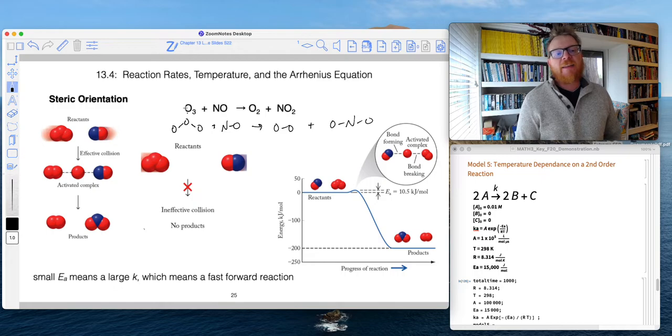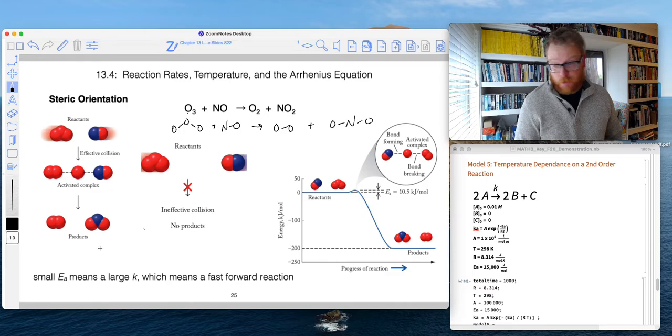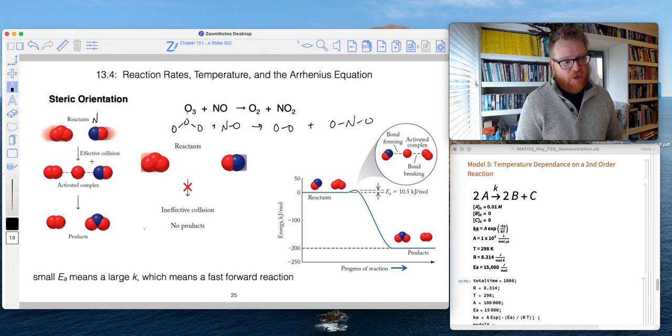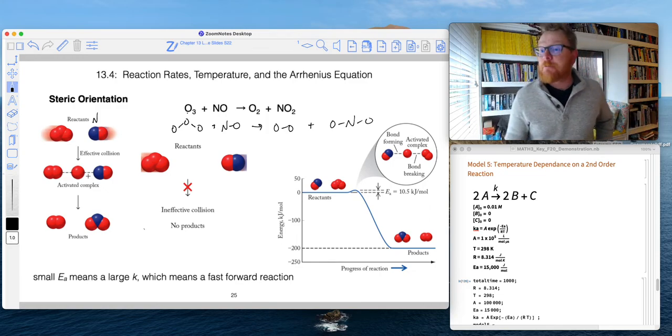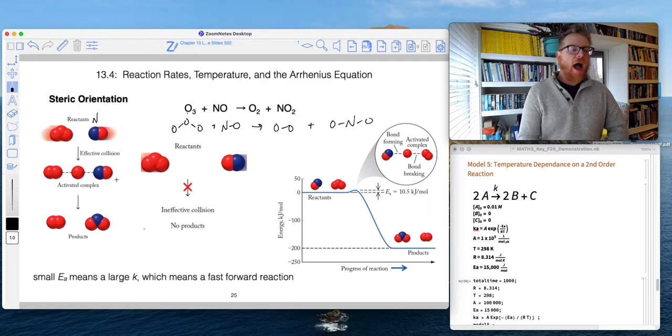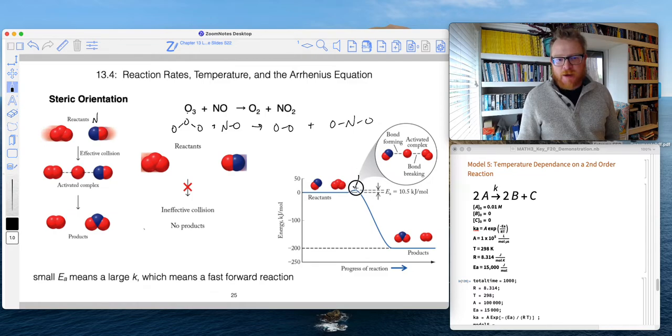So we really need this ozone to collide with NO in this way that will lead to a successful reaction. So for example, here you can see the nitrogen is in blue and it's oriented in the correct way. This is our activated complex, so this weird thing where for this brief temporary moment, the O3 and the NO were kind of all bonded together. So that would be at the very top of this barrier right here. And then they can finally go on to form products.